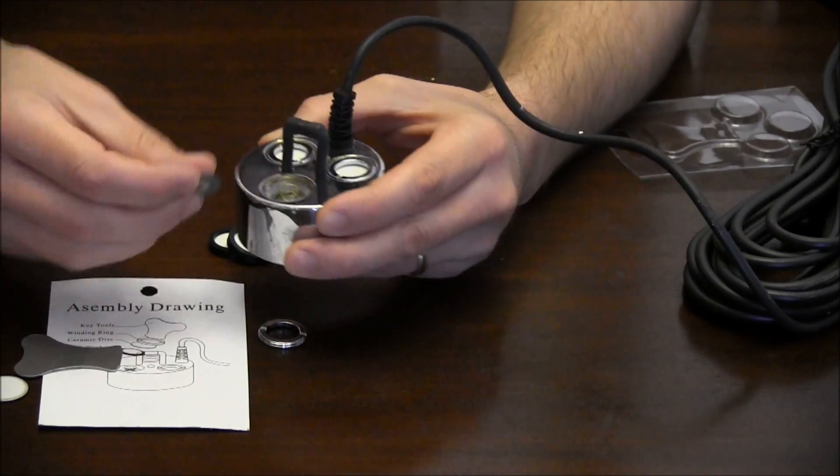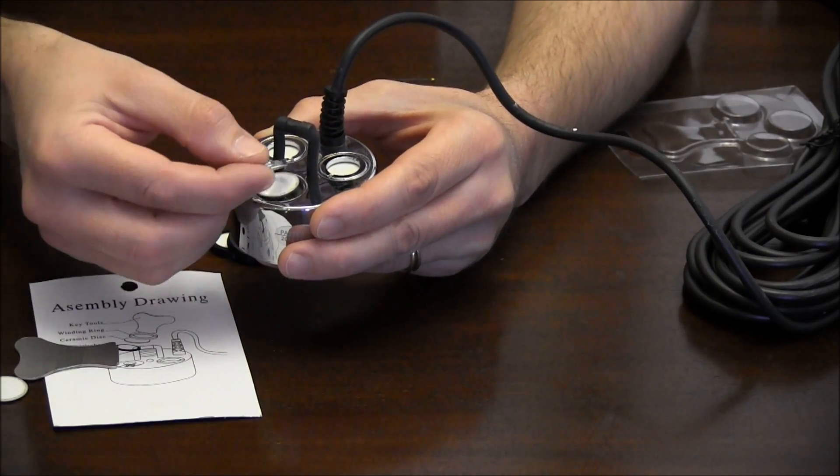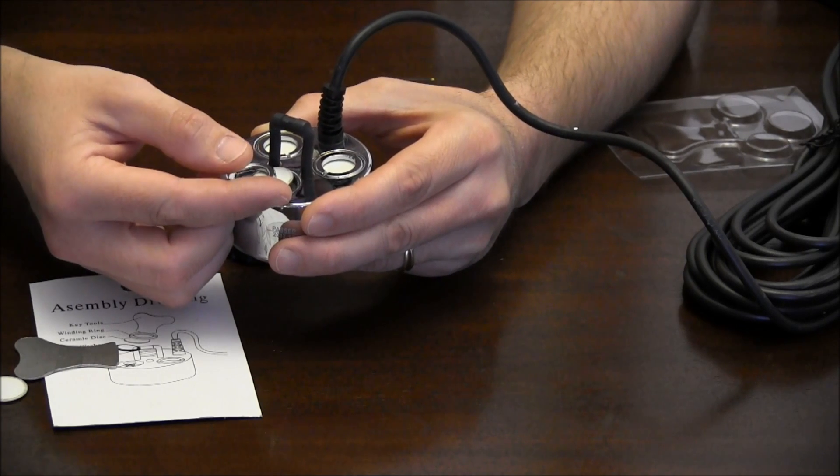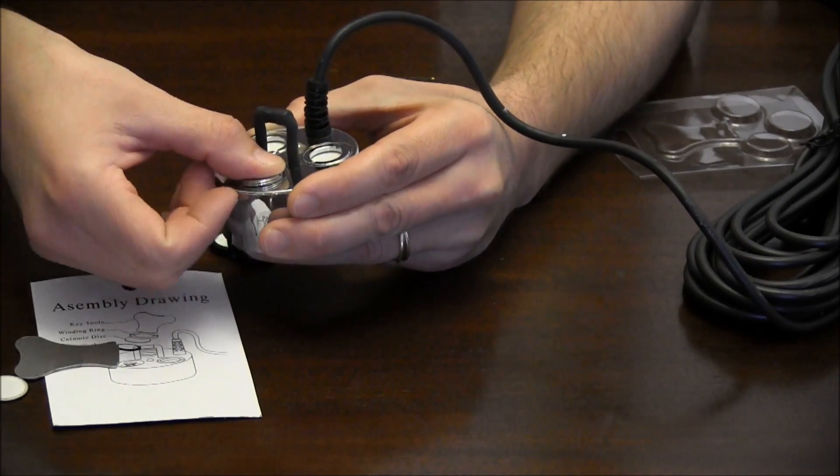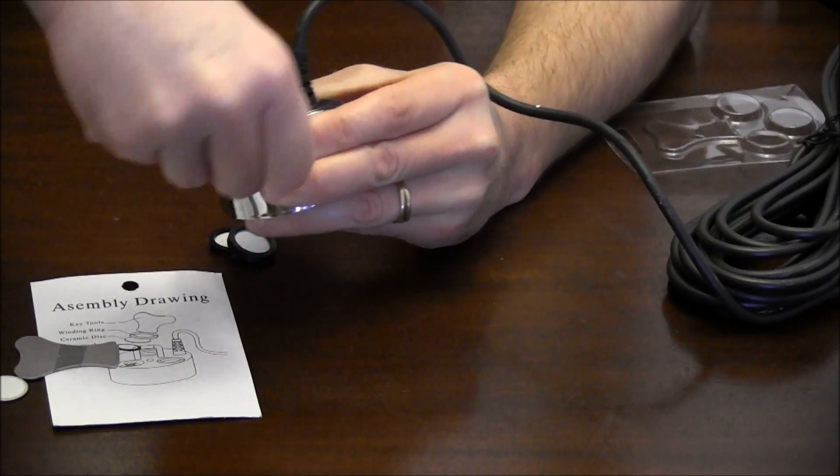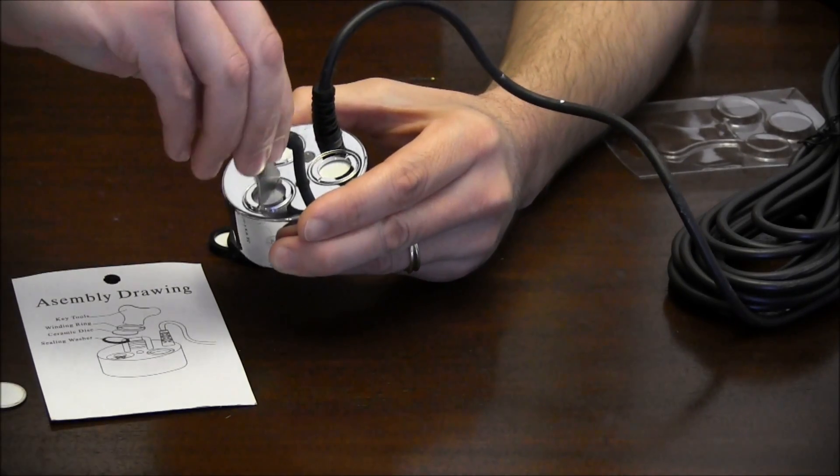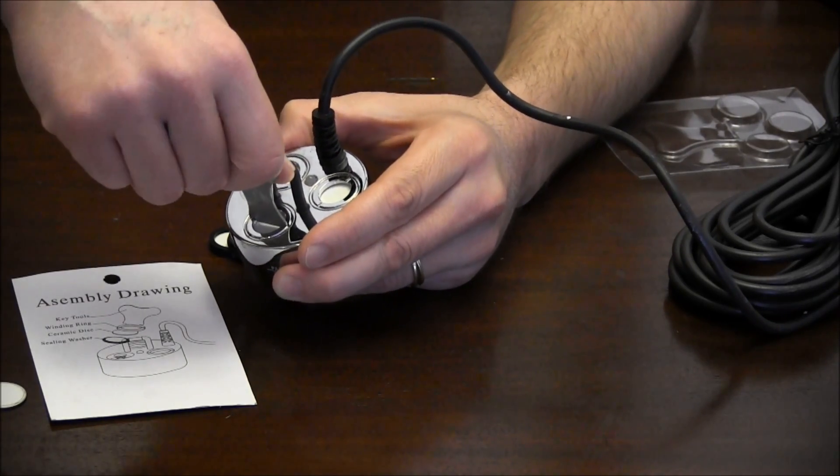Take the new disc and set it right on top. Take your retaining ring—and these things are a pain—so the way I do it is put my thumb over top of it so you have full control, and then you can spin it until you find it. There it is. Now when you tighten these down, make sure you don't cross-thread it.